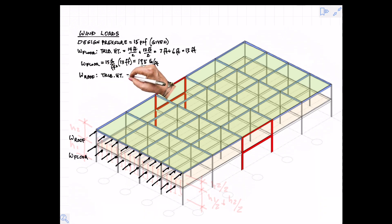At the roof level the tributary height is only half the distance or six feet and that gives us a linear load of 90 pounds per foot along the length.